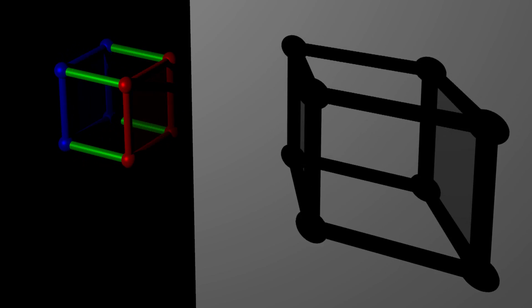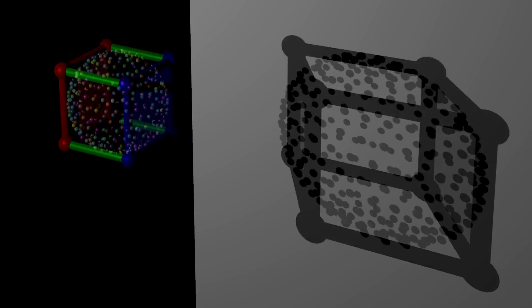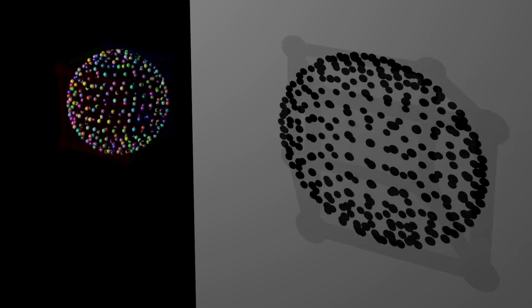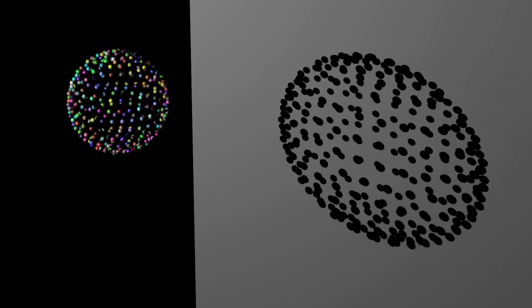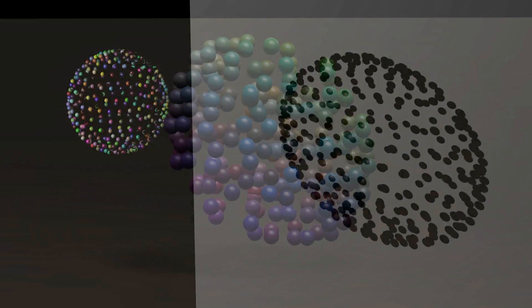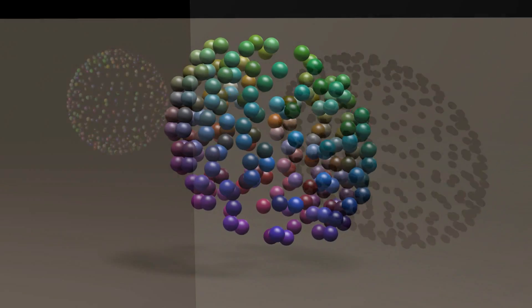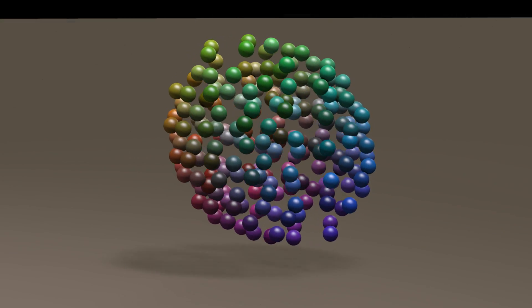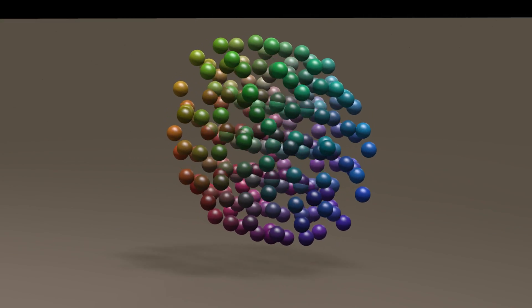Let us replace the cube with a sphere of balls. This rotating three-dimensional sphere of balls creates this two-dimensional shadow. If we had a rotating four-dimensional sphere of balls, it would create this three-dimensional shadow on our three-dimensional world.